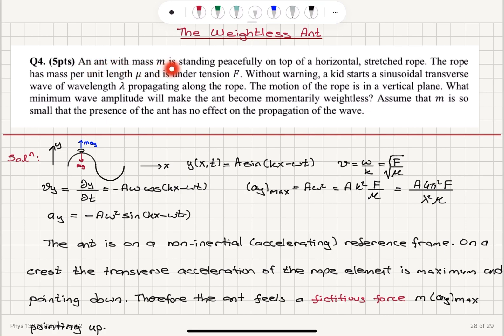So an ant with mass m is standing peacefully on top of a horizontal stretched rope. The rope has mass per unit length μ and is under tension F. Without warning, a kit starts a sinusoidal transverse wave of wavelength λ propagating along the rope. The motion of the rope is in a vertical plane. What minimum wave amplitude will make the ant become momentarily weightless? Assume that m is so small that the presence of the ant has no effect on the propagation of the wave.